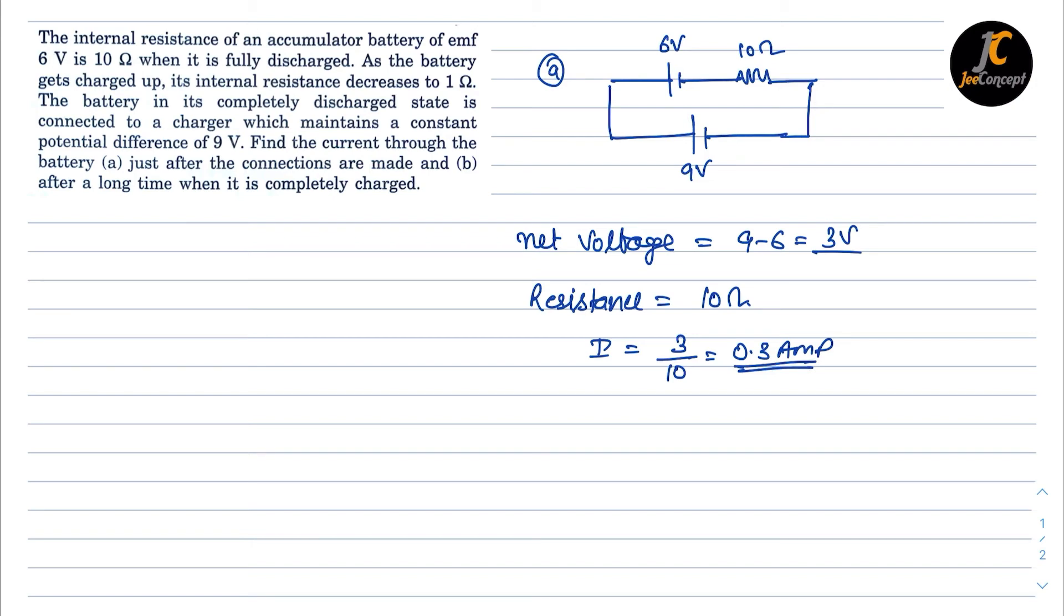In the second scenario, when the battery is connected for a long time, it means the battery is fully charged, and at that point, the internal resistance of the battery becomes 1 ohm.